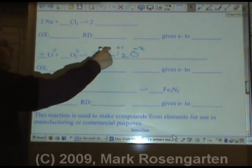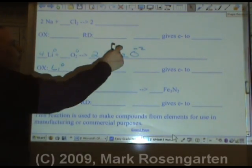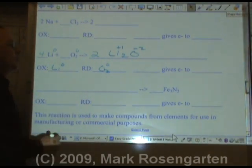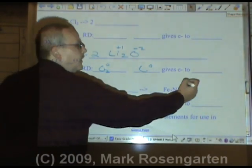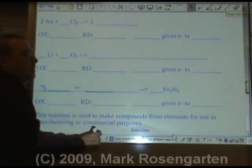Therefore, lithium becomes more positive by losing its valence electrons. Oxygen becomes more negative by gaining its valence electrons. Which means that lithium gives its valence electrons to oxygen.